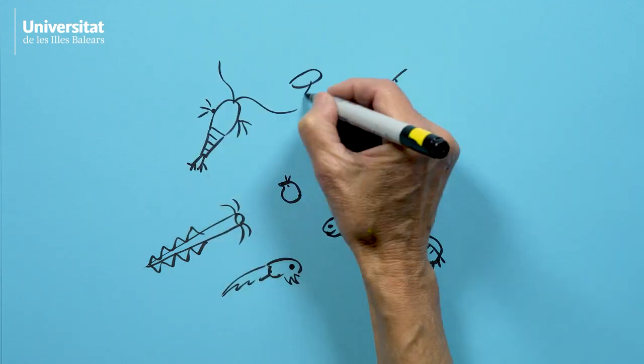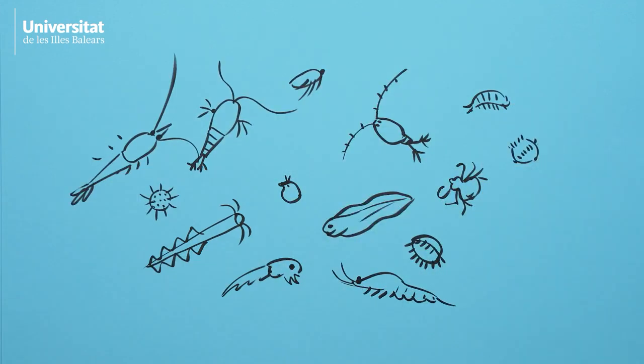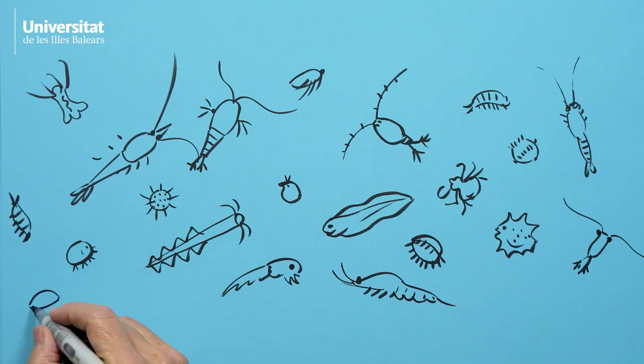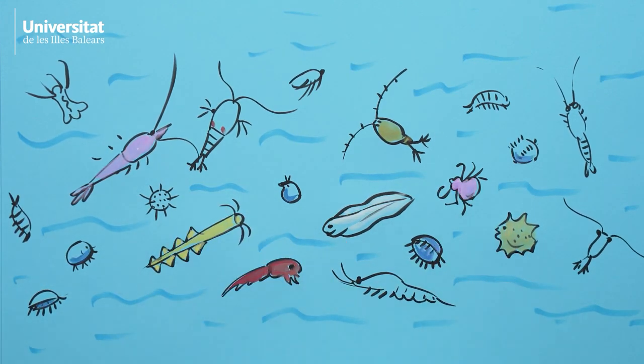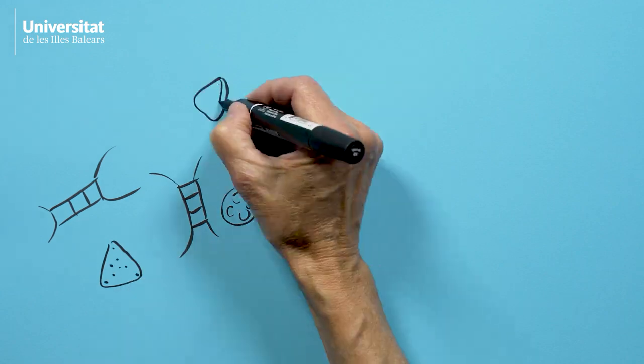These little guys feed mostly on zooplankton. Zooplankton consists of all sorts of tiny animals, including the larvae of fish and invertebrates, tiny crustaceans, and unicellular protists, all floating around in their salty home. And what do they eat?